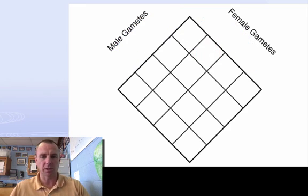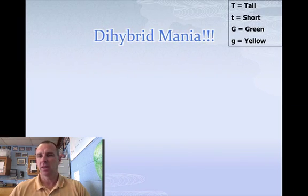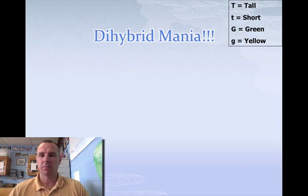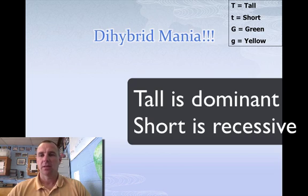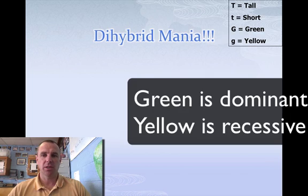Now let's go through the process of how to figure it out. The easiest way is to use an example. So: big T is tall, little t is short — that's one trait, height. And big G is green, little g is yellow — that's another trait, color.